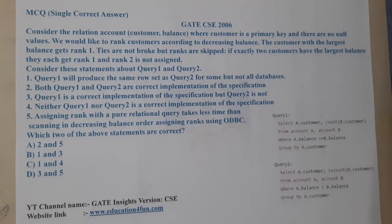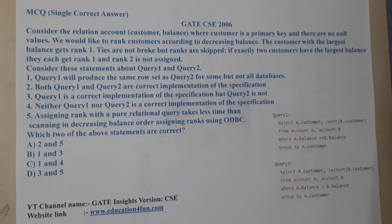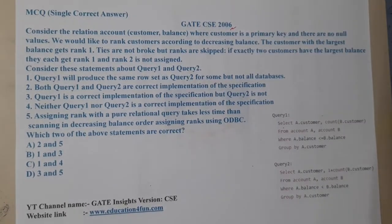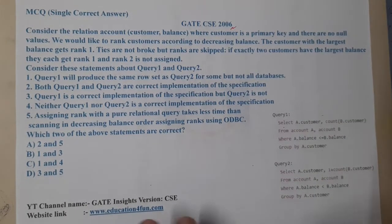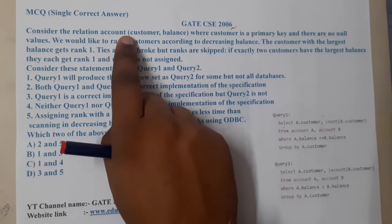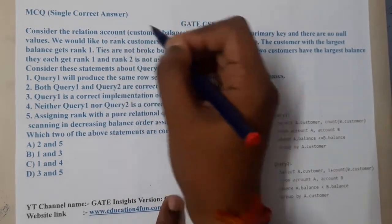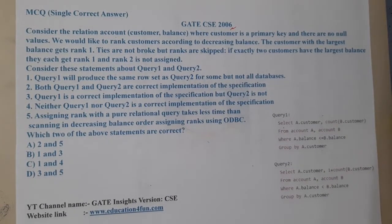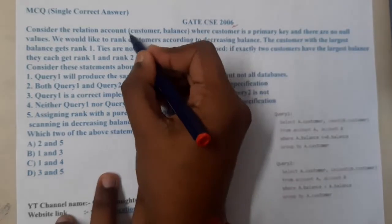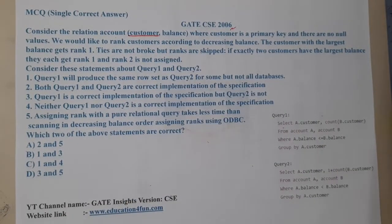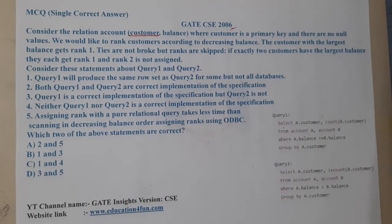Hello guys, we are back with our next lecture. This question belongs to GATE CSC 2006. The given question considers the relational relation account — a table with customer name and customer balance, where customer name is the primary key and there are no null values.